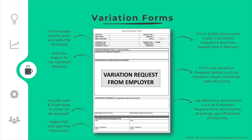The employer representative shall use the variation request form by entering the header details about the project, the contractor, and variation request numbering. Next, the variation request details shall be described and the related documents attached to the form shall be listed. For an instructed variation, the employer shall also prepare and issue an instruction form. The variation request shall be duly signed by the authorized employer representative or its assistant.